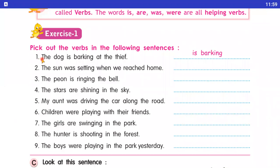First: the dog is barking at the thief. Is sentence mein jo dog hai, woh kya kar rahe hai? Bark kar rahe hai thief ke upar. To hum with helping verb lenge: is barking.